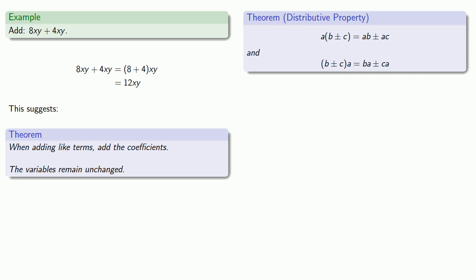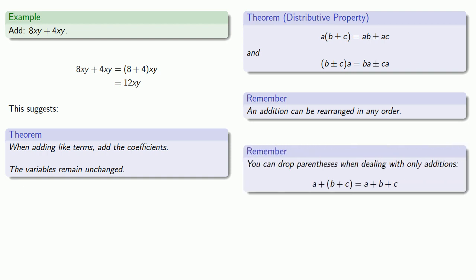Now, it's worth pointing out that while the distributive property holds for both addition and subtraction, additions have two very useful features that mean we'll always, wherever possible, want to write things in terms of addition. First of all, an addition can be rearranged in any order that we want. And second, if we only have additions, we don't have to worry about the parentheses. We can just drop the parentheses. So a plus b plus c, well, that's just a plus b plus c.